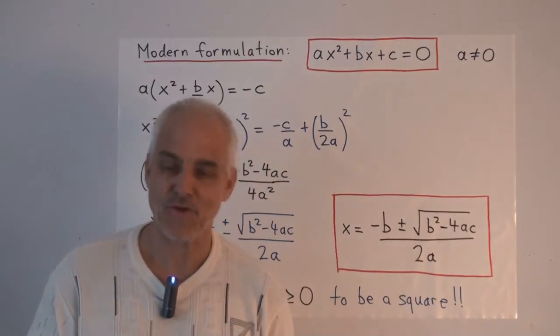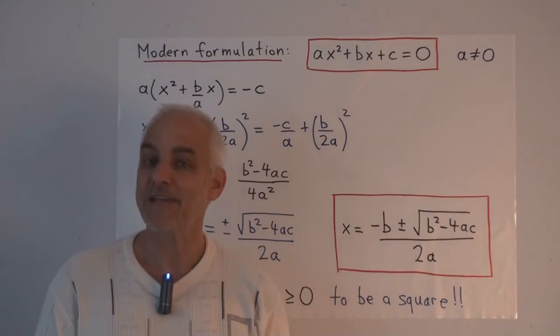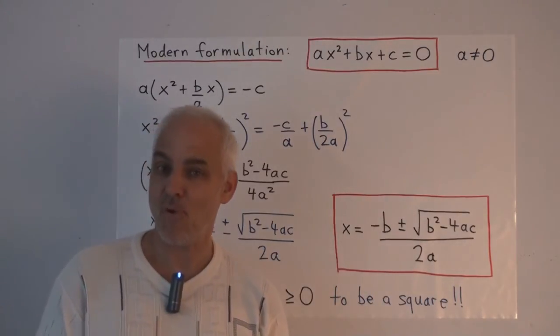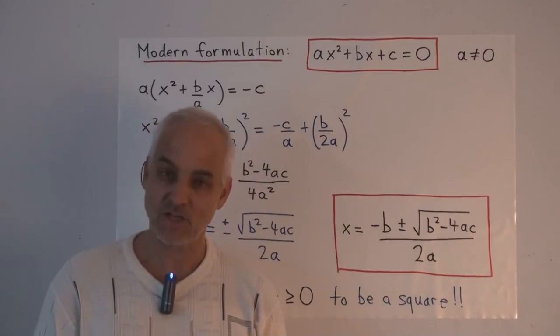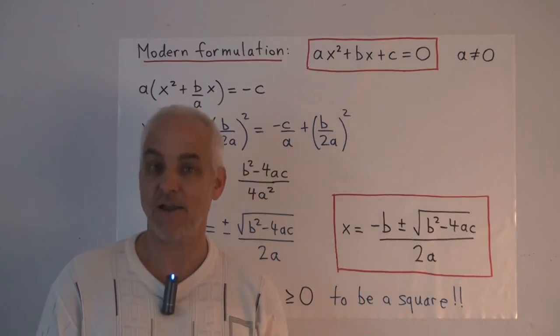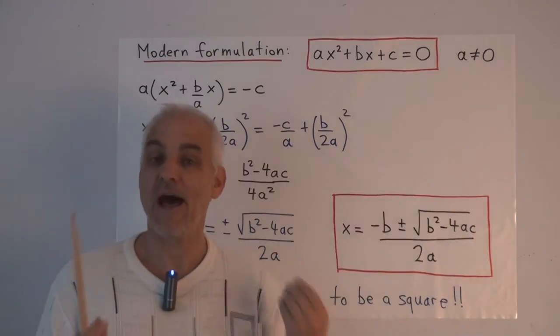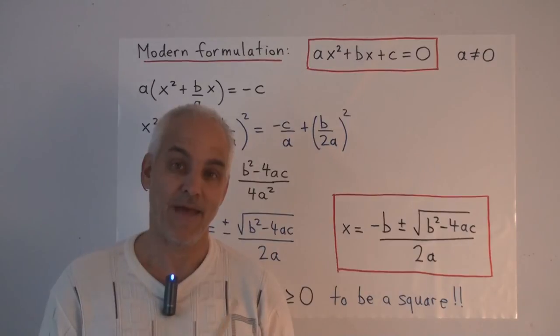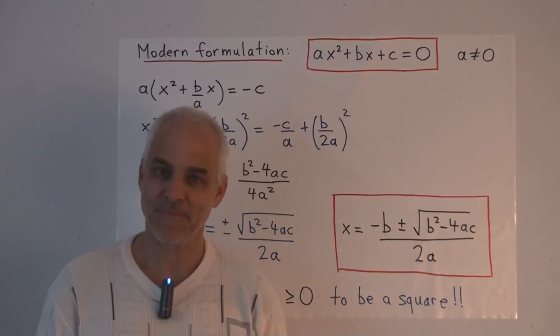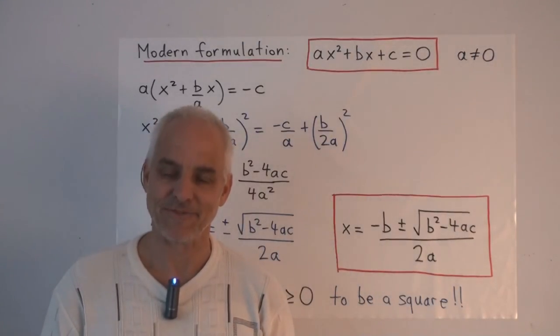Okay, so that's good. That's the classic formula for the quadratic equation. Next time we're going to talk about an important ingredient to this business, which is how do you actually find a square root? We've been assuming that you can kind of do it, but how do you actually find the square root of a number? That's a very interesting algorithm which we'll discuss next time. I hope you'll join me for that. I'm Norman Wildberger. Thanks for listening.